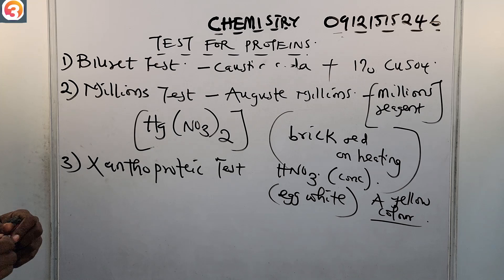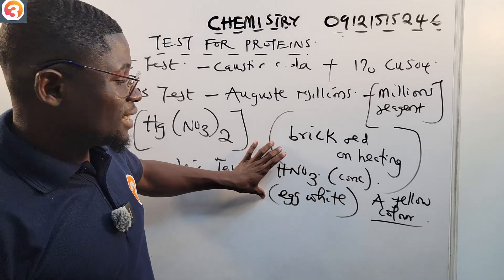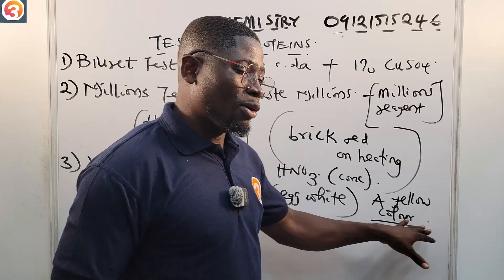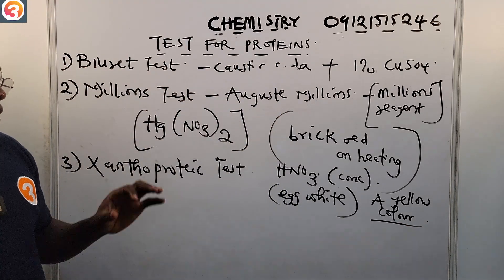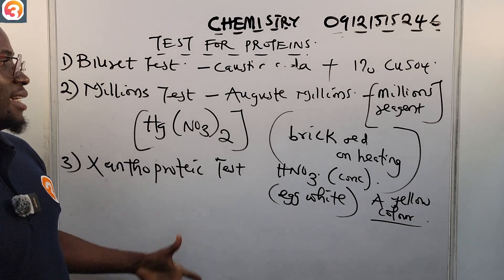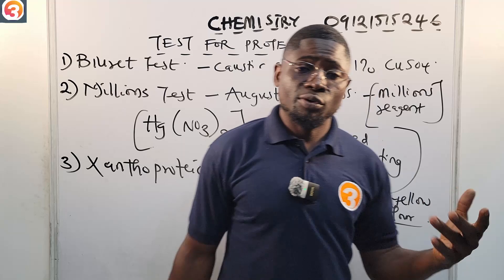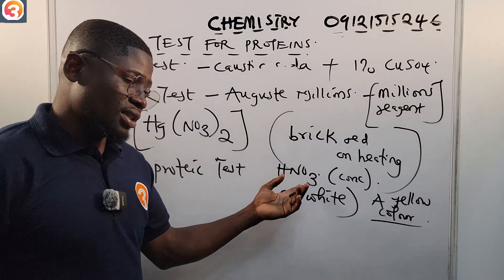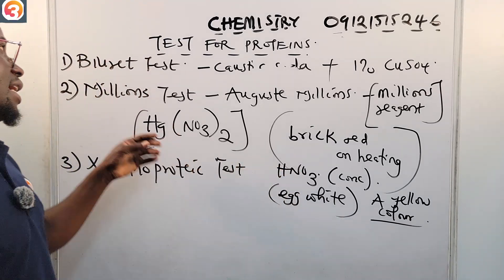So a yellow color confirms the presence of a protein. So if you do not see xanthoproteic test, you see nitric acid test using concentrated trioxonitrate(V). The three tests are Biuret test, Millon's test, xanthoproteic test.